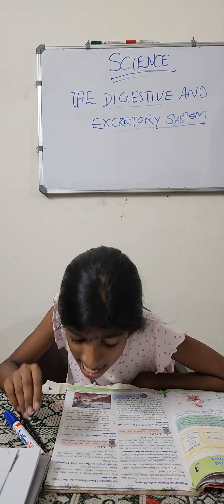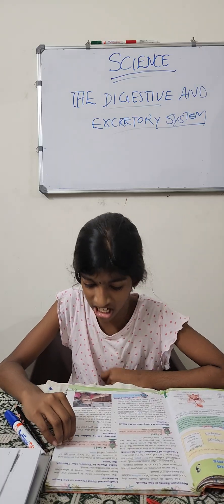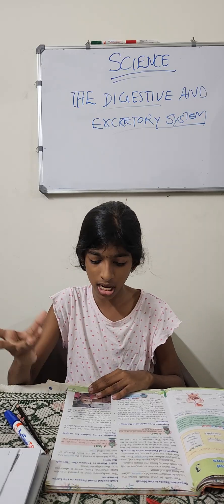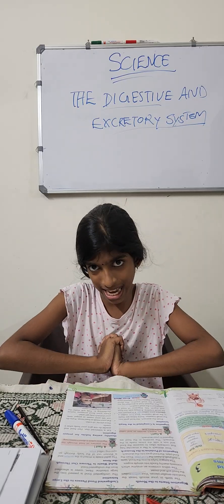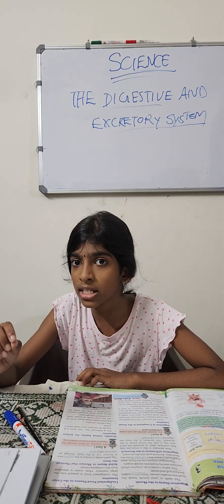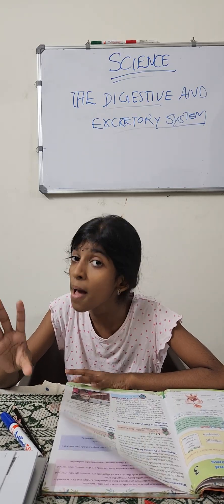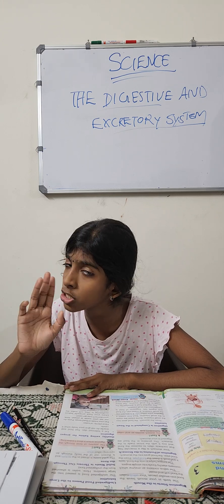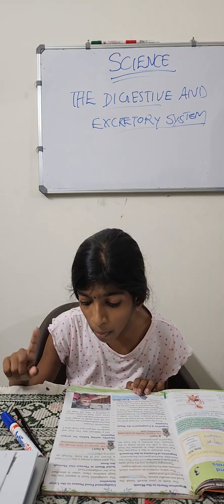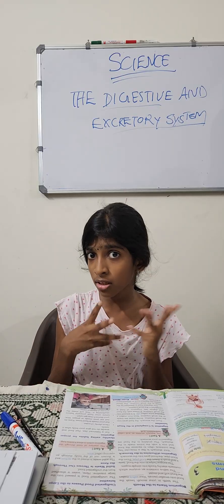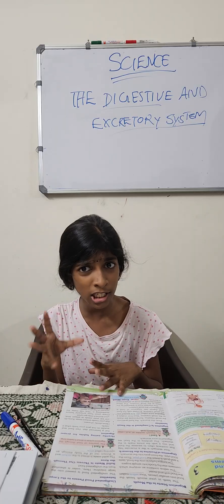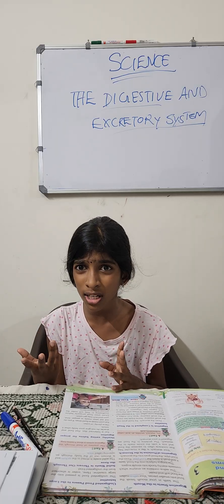Healthy eating habits for proper digestion: eat a balanced diet with proteins and carbohydrates. Avoid fast food snacks like french fries, burgers, chips, biscuits, and chocolates, as they do not give your body what it needs.